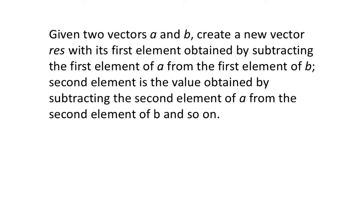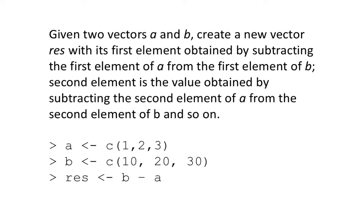Given two vectors a and b, create a new vector res with each element obtained by subtracting the corresponding element of a from the corresponding element of b. So we are subtracting every element of a from every element of b. It's just a vector operation: res <- b - a. We are computing b minus a and putting the result into the variable called res.